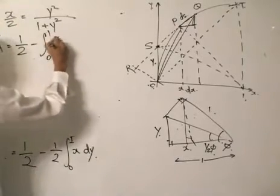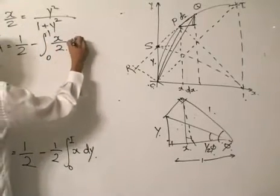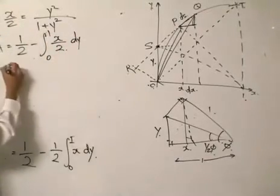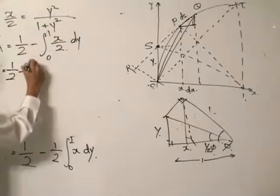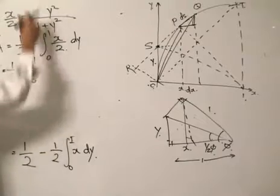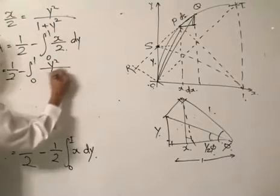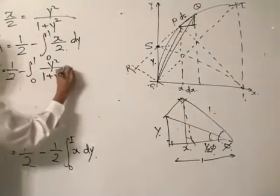x divided by 2, dy, which equals half take away integrate, substituting using the relationship that we have found out: y squared divided by 1 plus y squared dy.